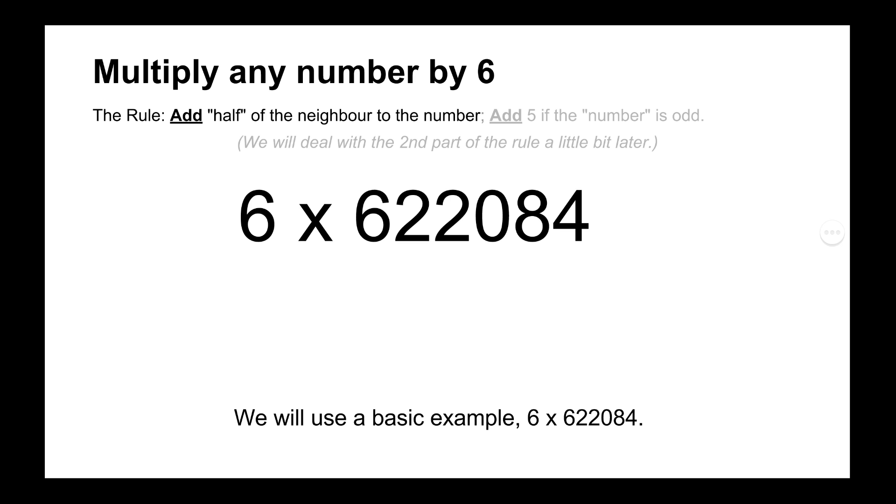So there are two parts to multiplying any number by 6. The first rule is to add half of the neighbour to the number. The second rule is to add 5 if the number that we're manipulating at the time is odd. But we'll cover that in our second example. But first of all, we'll just deal with halving the neighbours and adding them to the numbers.